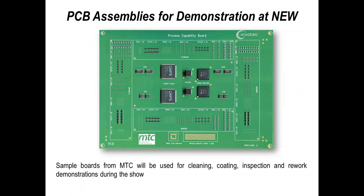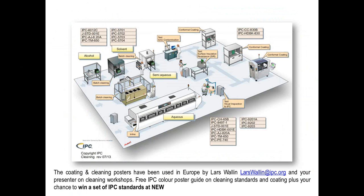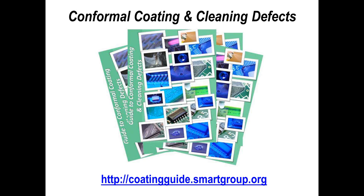The printed circuit board we'll be using includes a range of different surface mount components, and we'll also be doing other testing on this particular board. IPC are supporting this activity by providing wall charts illustrating the cleaning, conformal coating, and contamination testing specifications. We've also got a range of IPC standards being offered as prizes during the sessions. You can download a free guide to conformal coating and cleaning defects — a picture guide illustrating some of the most common defects — from the website listed.